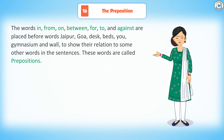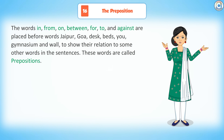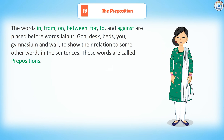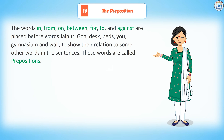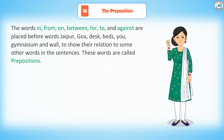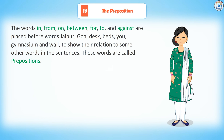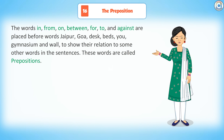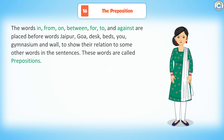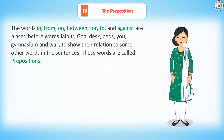The words in, from, on, between, for, to, and against are placed before the words Jaipur, Goa, desk, beds, you, gymnasium, and wall — to show their relation to some other words in the sentences. These words are called prepositions.